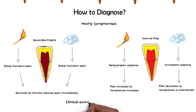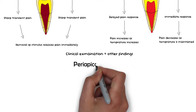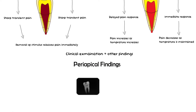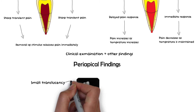Clinical examination is important to confirm the diagnosis. Clinically, a small caries lesion, minor tooth fractures, and attrition may all indicate that a tooth is inflamed, with or without symptoms, and should be treated appropriately. On periapical X-ray, a small translucency may be appreciated in the area of the caries lesion.